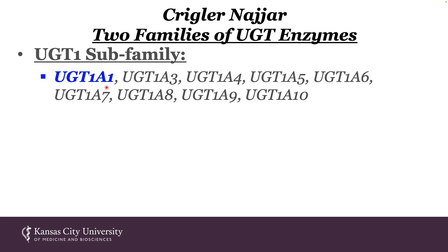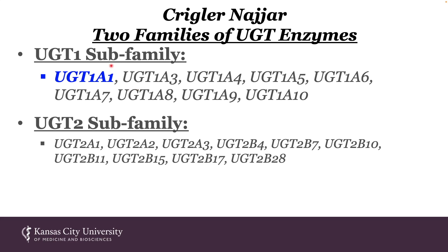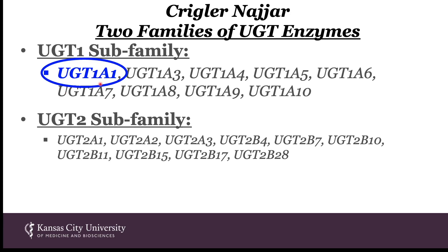There are two subfamilies of UGT enzymes: UGT1 and UGT2. UGT stands for UDP-glucuronosyl transferase. With respect to Krigler-Nyar, UGT1A1 is the most important enzyme, as it conjugates glucose to bilirubin — conjugated bilirubin is UGT1A1's product. However, UGTs all have broad substrate selectivity; bilirubin is not the only thing that UGT1 sticks a sugar group on. Many xenobiotics, foreign compounds, drugs, and endobiotics also undergo this type of biotransformation.